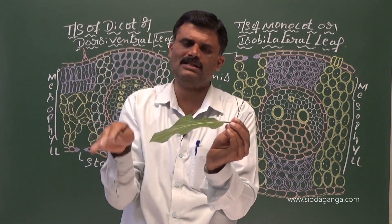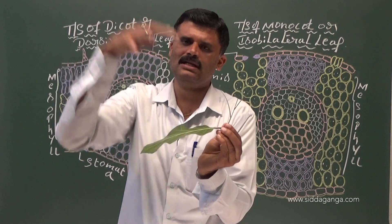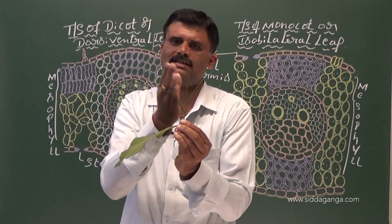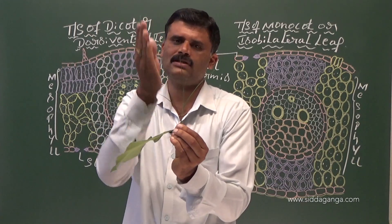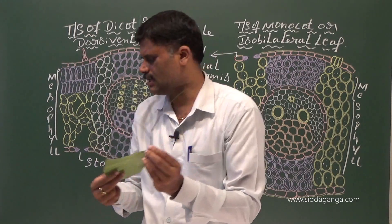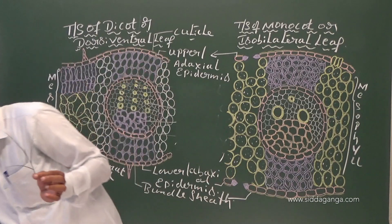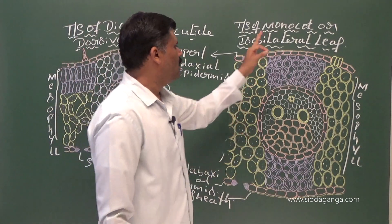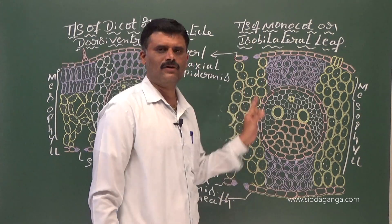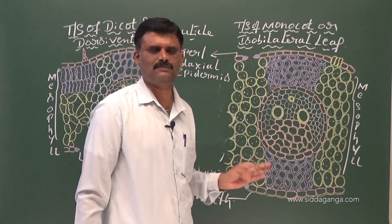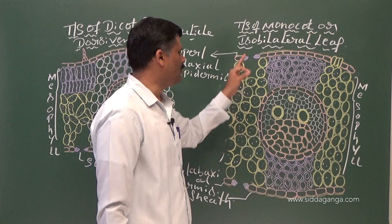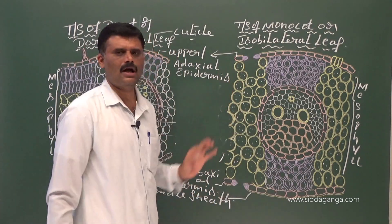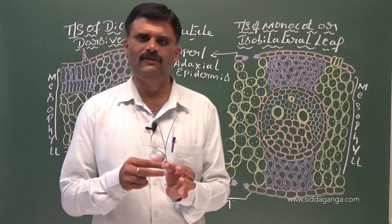Because the grass leaf stands vertically, for 6 hours the upper surface receives sunlight focus and for 6 hours the lower surface receives sunlight. Both surfaces receive equal sunlight — 6 plus 6 hours. So the mesophyll region can be consumed equally on both sides; that is why it is called an isobilateral leaf.